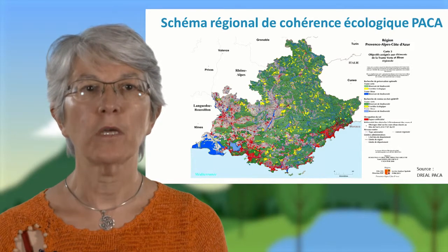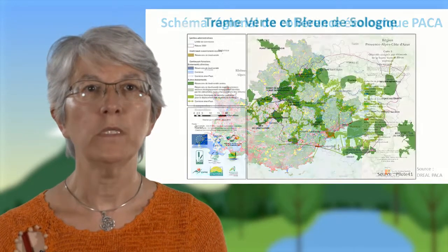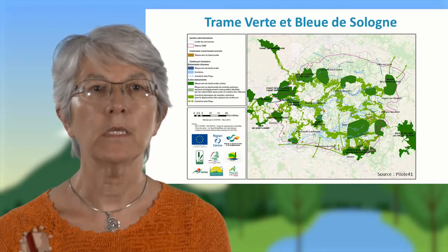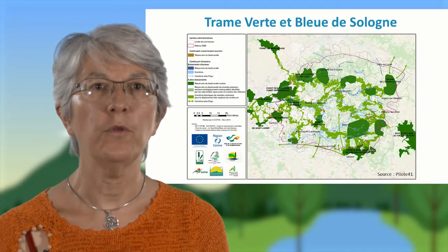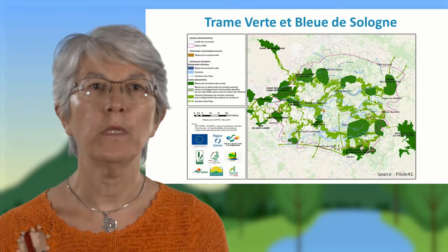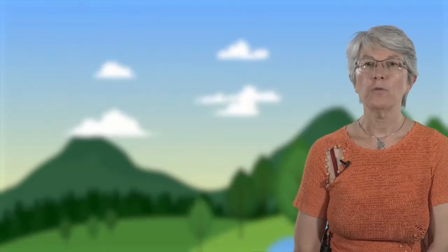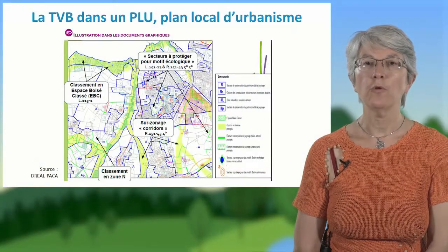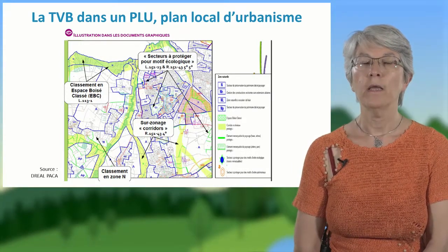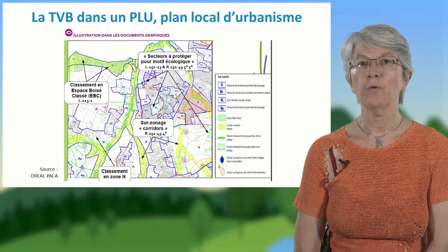À l'échelle de territoires plus petits, par exemple des parcs naturels régionaux, des intercommunalités ou le site Natura 2000 de Sologne, la cartographie peut être plus précise. On voit les réservoirs de biodiversité en vert foncé, reliés par les corridors en vert plus pâle et les continuités aquatiques et des milieux humides en bleu. À l'échelle des documents d'urbanisme, les plans locaux d'urbanisme pour les communes, la trame verte et bleue doit être définie à l'échelle communale et traduite dans les documents graphiques et les règlements du plan local d'urbanisme.